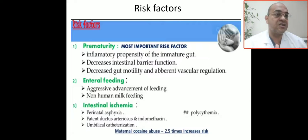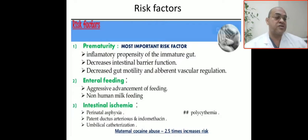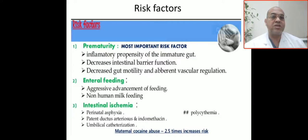If the mother takes cocaine, the risk of gut perforation is significantly increased. So our patient's risk factors are: premature at 28 weeks — the most important risk factor.